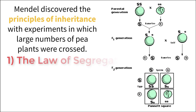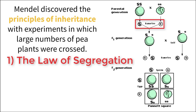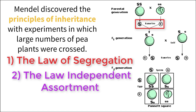The Law of Segregation describes that alleles separate when gametes are formed, resulting in each gamete carrying one copy of an allele, or half the DNA required for a normal cell to operate. Second, the Law of Independent Assortment describes that when the alleles are separated during gamete formation, they separate randomly and independently from all other genes, causing a large pool of possible variation.